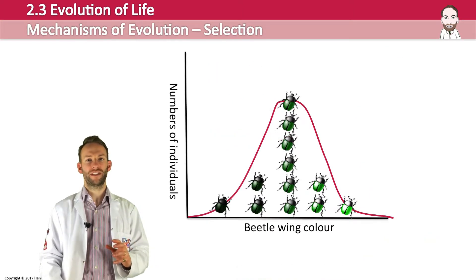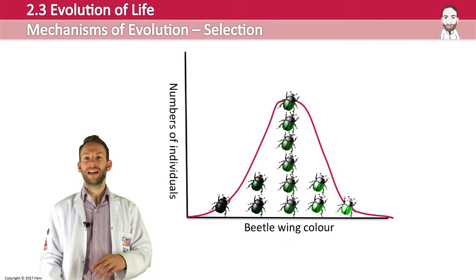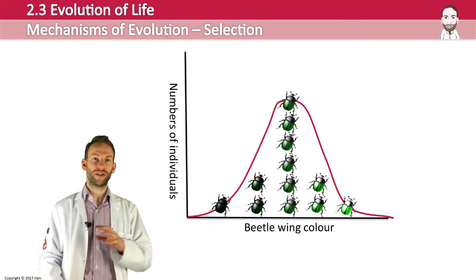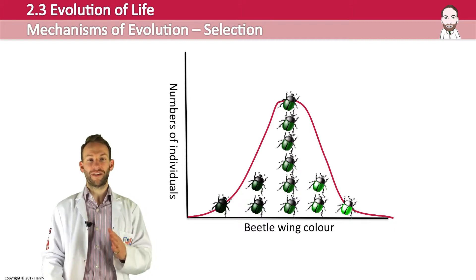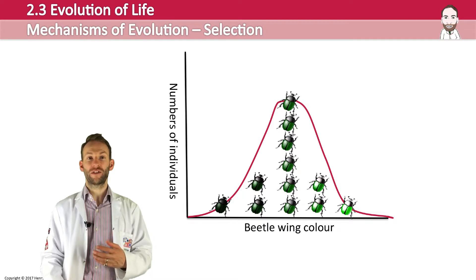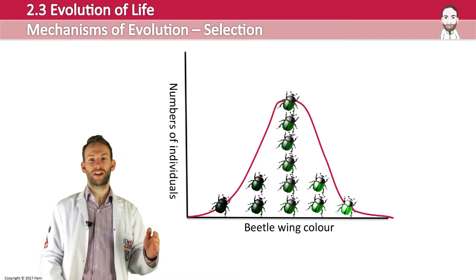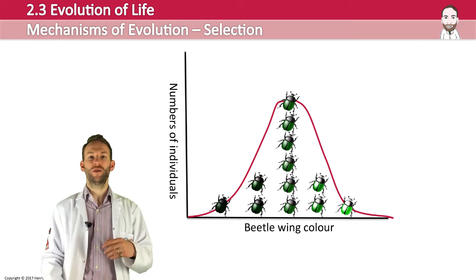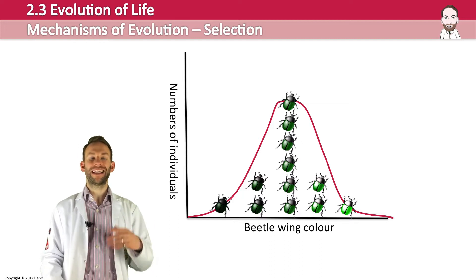Let's look at a typical population first. Within any population there is always a range of variation: the majority will cluster around the mean, with fewer individuals at the extremes. Take height in humans — most people are of average height, with fewer and fewer people being very short or very tall. In the beetle wing colour example on this presentation, the average is a dark green, but some beetles vary towards very dark green or a lighter colour. This is a normal distribution, and we'll look at how this distribution shifts under different selection pressures.